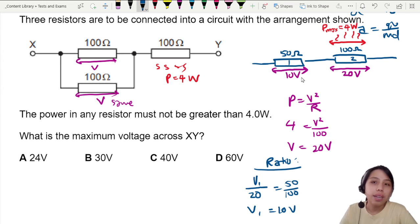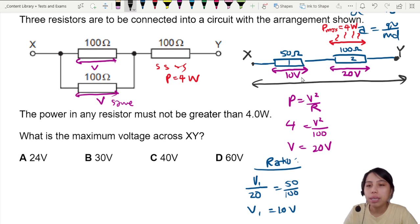So that means this is the maximum setting. I cannot be any larger, because then you will fry the resistor. That means between terminal X and Y, if you connect to a battery, it should be at most 30 volts. Because here to here, 10 plus 20 is 30. So this is 30 volts. Best way we can choose is 30 volts.